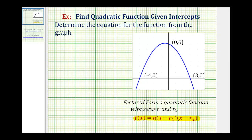Looking at our graph, notice how we have an x-intercept of negative four and an x-intercept of positive three. So x equals negative four would be a zero of the function, and so would x equals positive three.